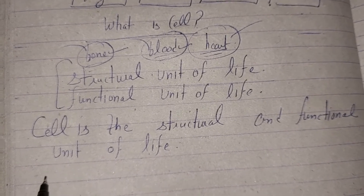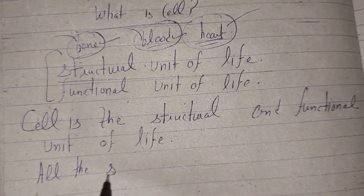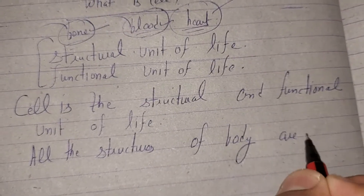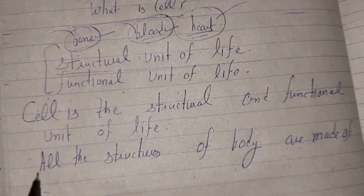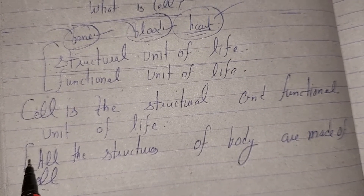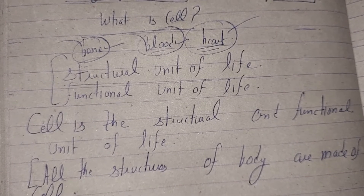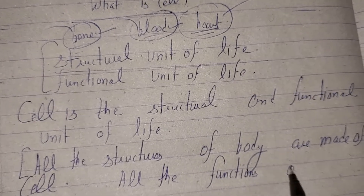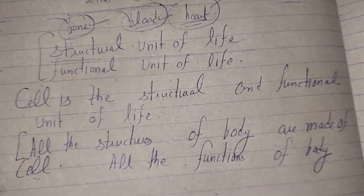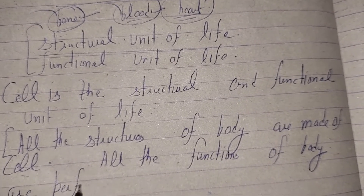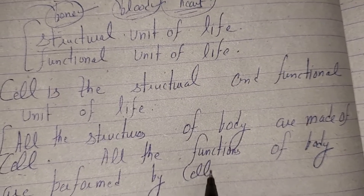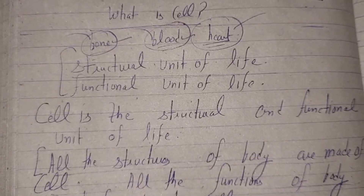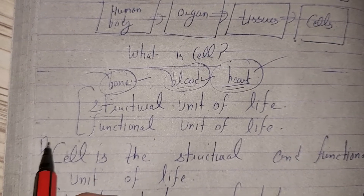They can ask: why is it structural? Because all the structures of the body, whether it is a plant or any living organism, are made of cells. All the functions of the body are performed by the cells. That is why the cell is known as the structural and functional unit of life. This is the definition of a cell.